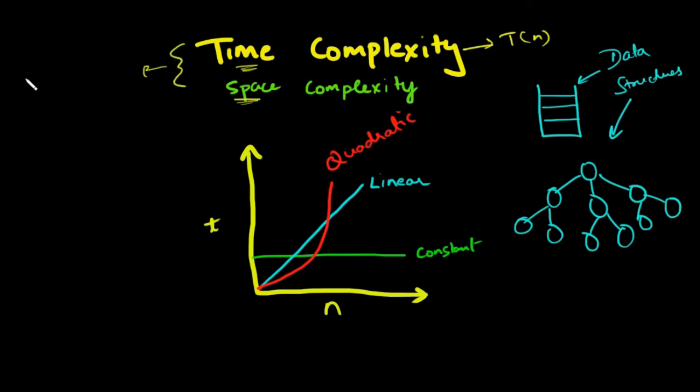A more formal definition would be something like this: time complexity of an algorithm quantifies the amount of time taken by an algorithm to run as a function of the length of the input.